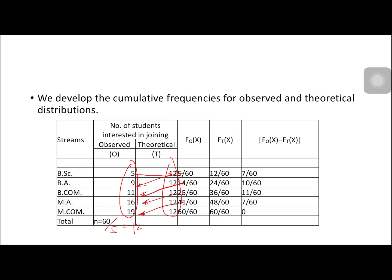For FT(X), we have 12 over 60. Then, 12 plus 12, we have 24. Then, 24 plus 12, we have 36. And then, 36 plus 12, we have 48. And then, 48 plus 12, we have 60.